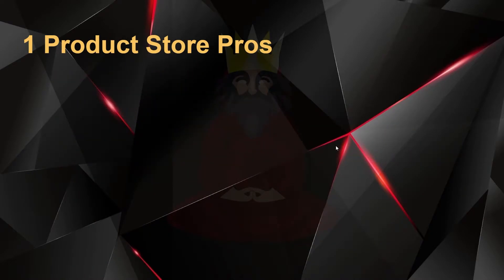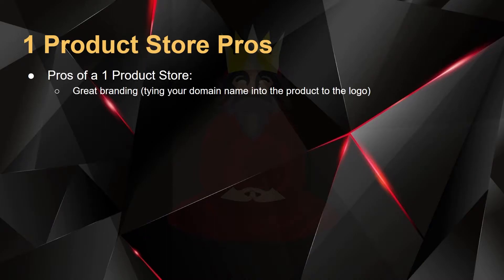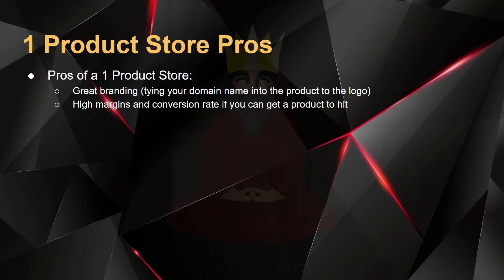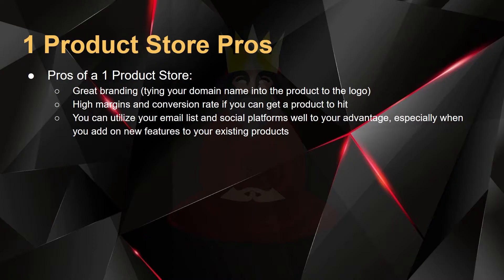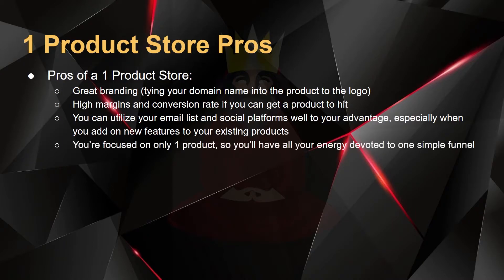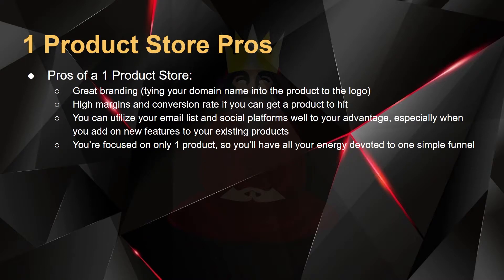The second type of store: one product stores. Here are the pros. You can do great branding with a one product store — tying your domain name into the product and the logo, you can have everything congruent and it's really easy to do. You have high margins and one product stores usually have a great conversion rate if you can get the product to hit. You can utilize your email list and social platforms well because the branding is there, and you're focused only on one product so you'll have all your energy devoted to a very simple funnel.